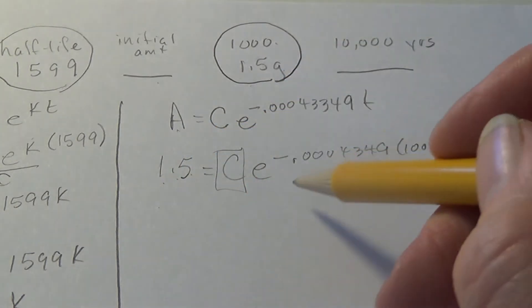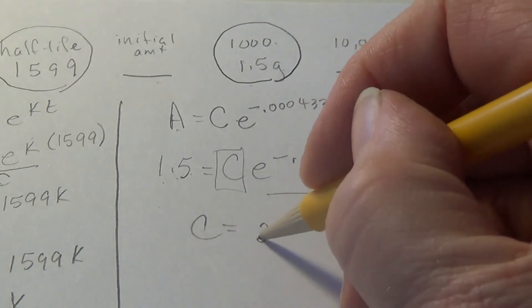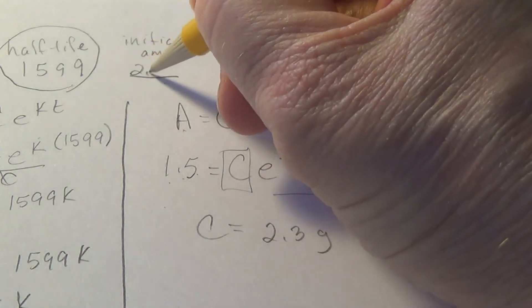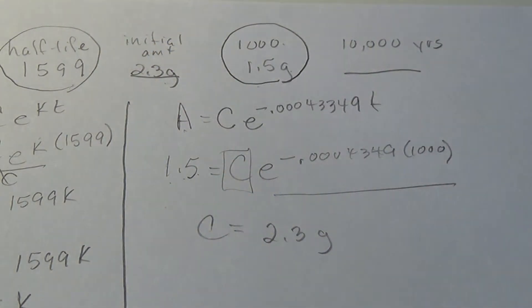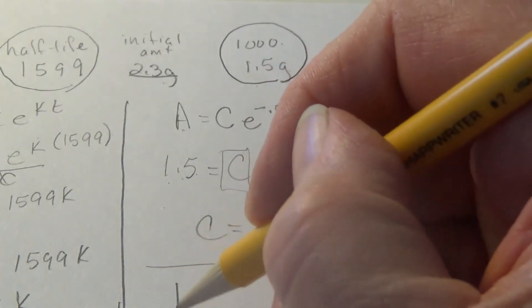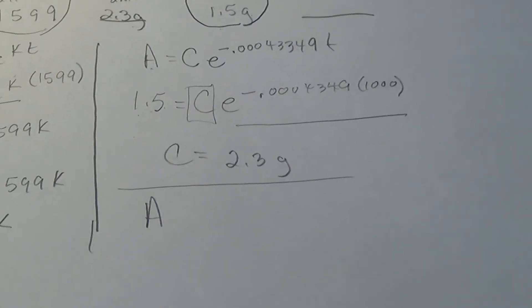So if I divide 1.5 by this number, calculator work, we find out that the amount initially turns out to be 2.3 grams. So I'm going to put that back up in my chart. All right, and to finish it.